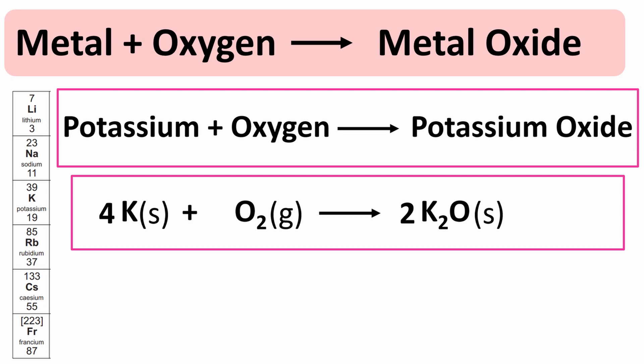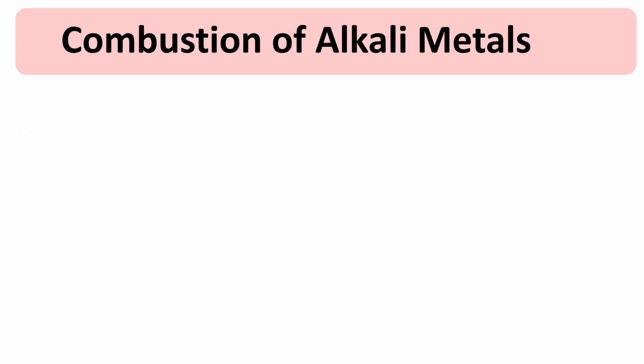So instead of seeing tarnishing, the metals actually ignite and they burn with different flame colours. And when you burn something in oxygen that's called combustion. So burning alkali metals and heating them in oxygen is a combustion reaction.